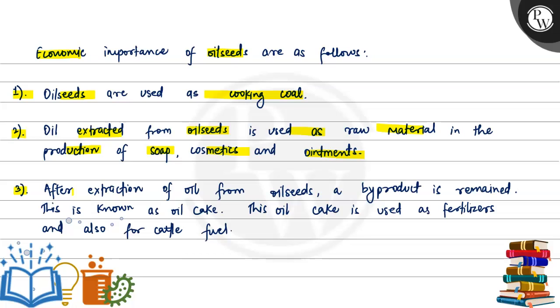After extraction of oil from oil seeds, a by-product remains. This is known as oil cake. This oil cake is used as a fertilizer and also as cattle feed.